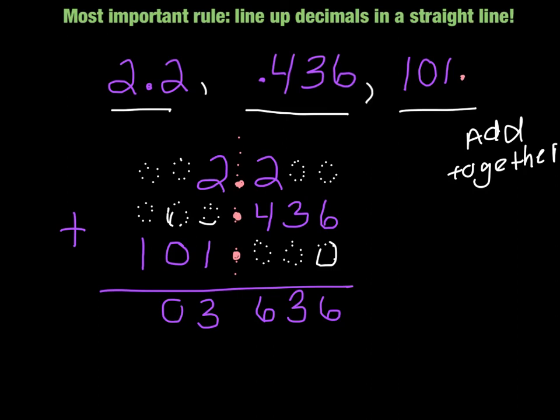And then zero plus zero plus one is one. When I add my decimal, the last thing I do is I just bring my decimal point straight down. And so my answer to this problem is 103 and 636 thousandths.